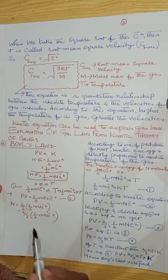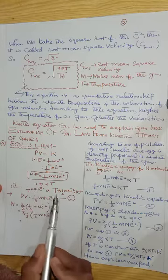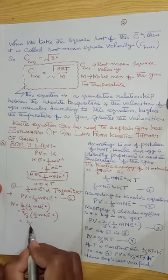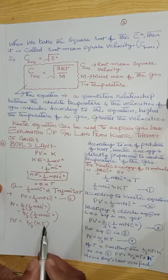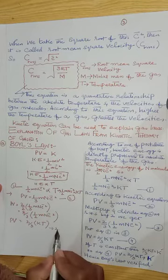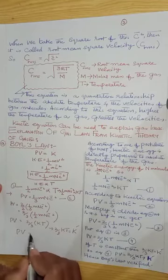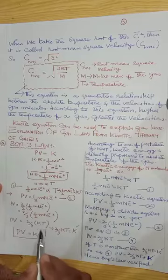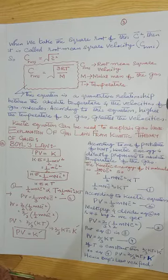The purpose is to introduce the expression of kinetic energy and correlate it with the kinetic equation. We can see that ½mnc̄² equals kT from equation 1, so substituting: PV = (2/3)kT. Since temperature is constant, (2/3)kT is a new constant K'. Therefore PV = K', and Boyle's law is verified from the kinetic equation.